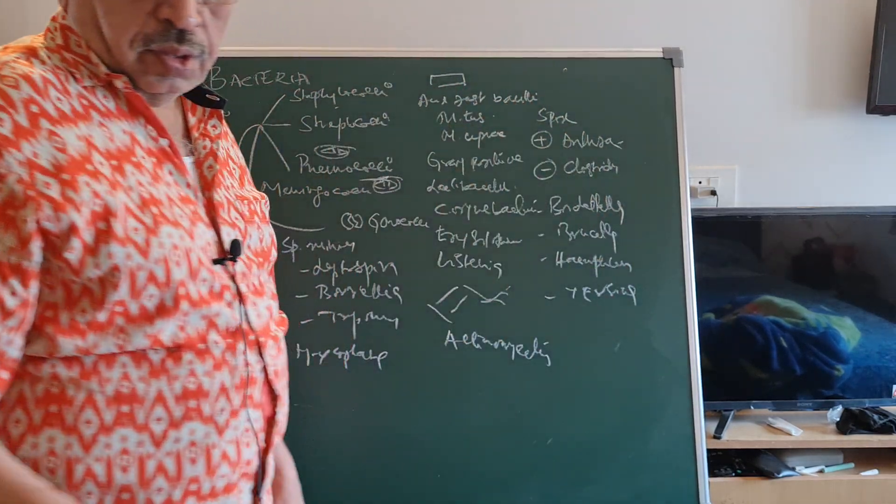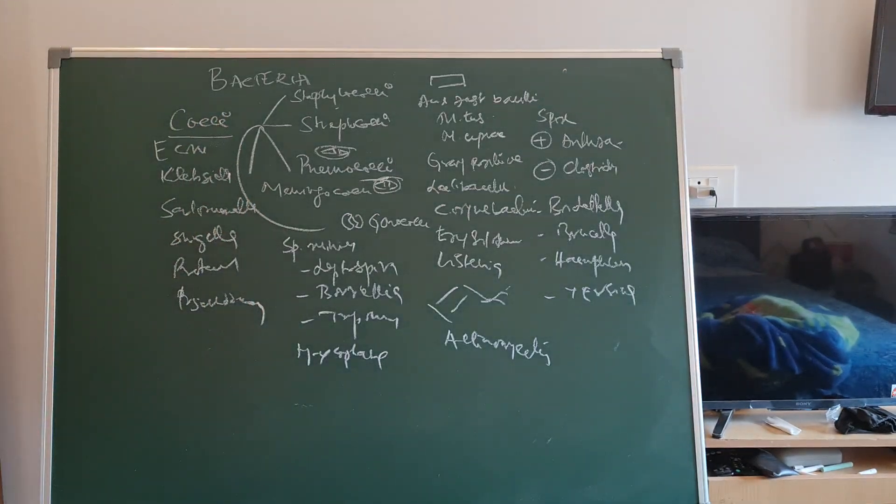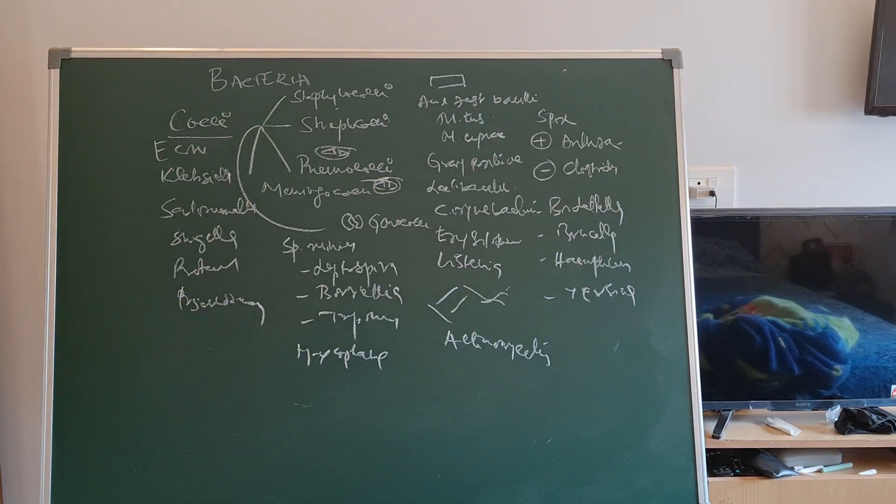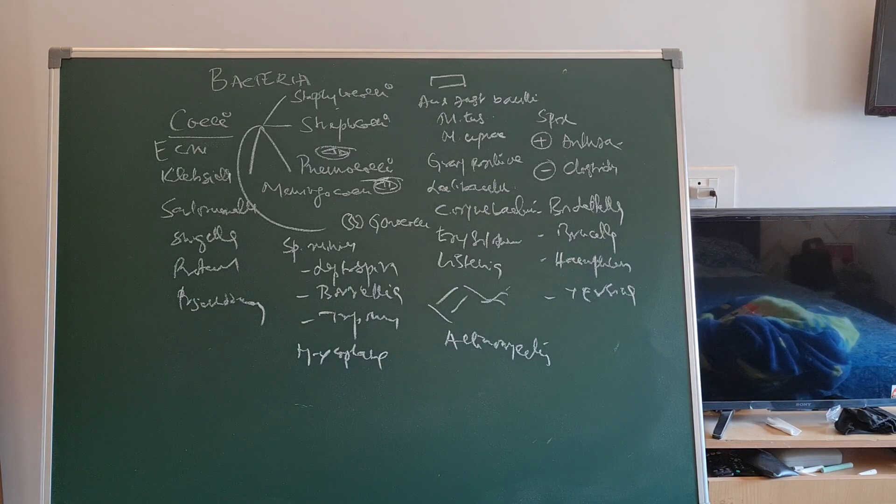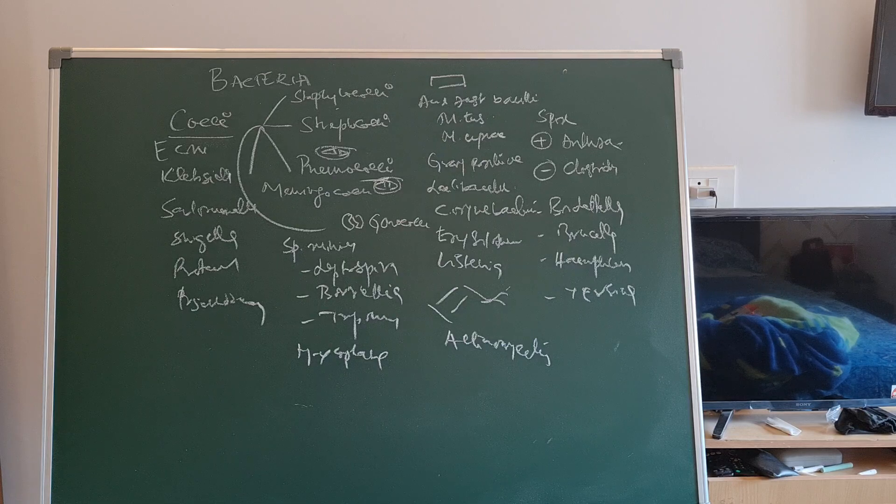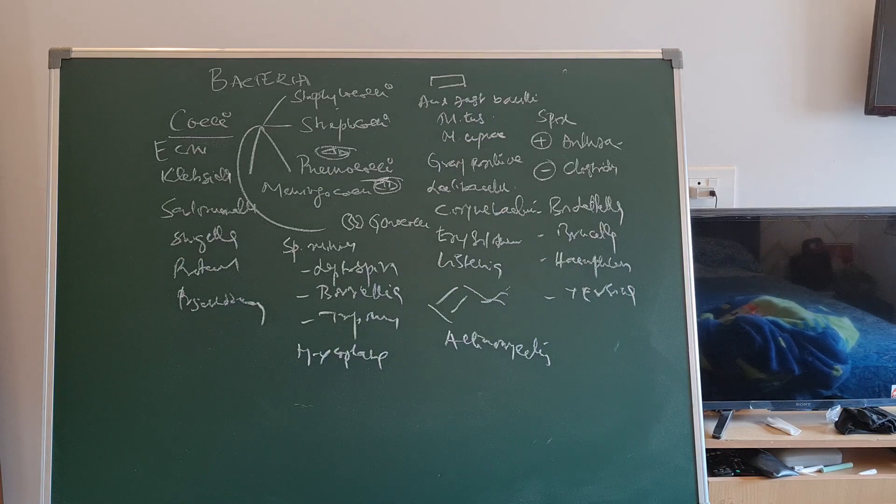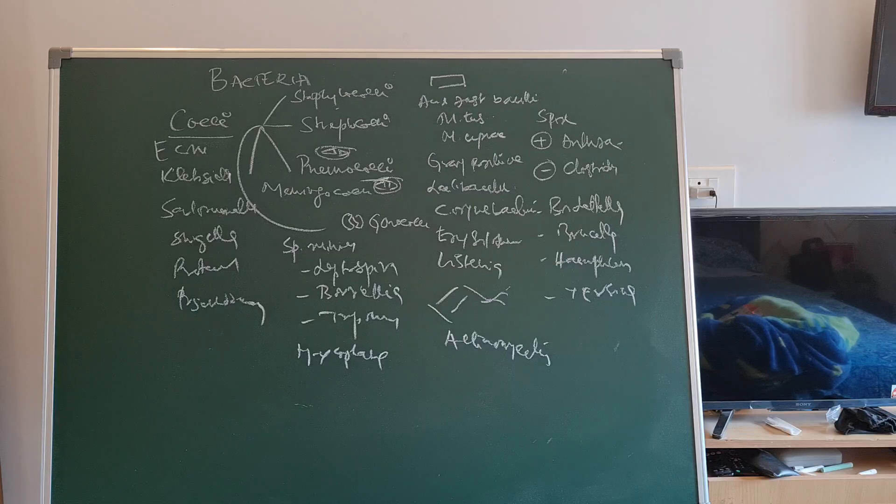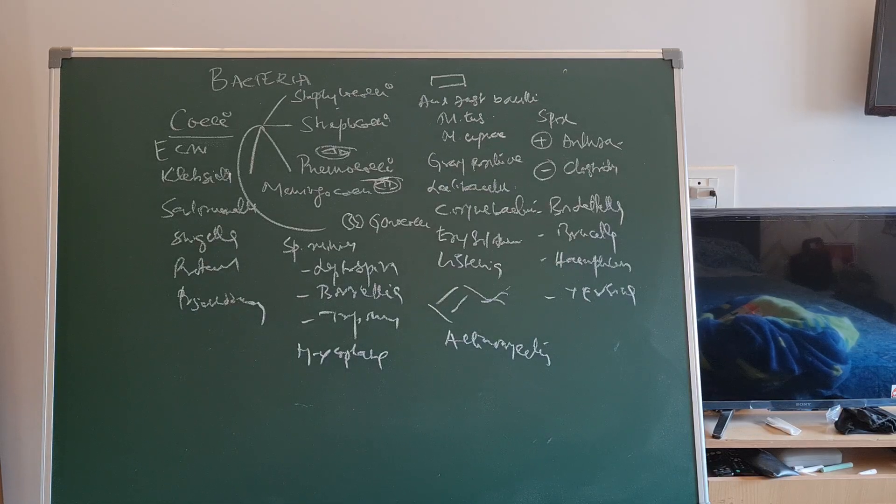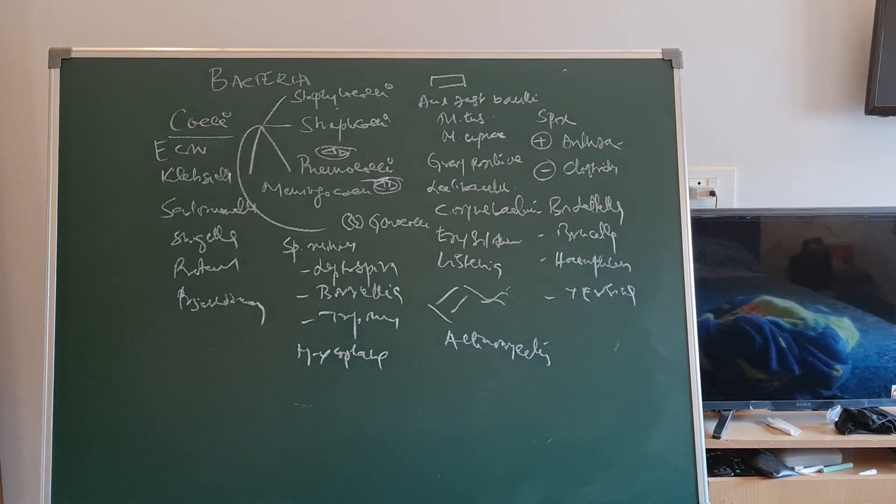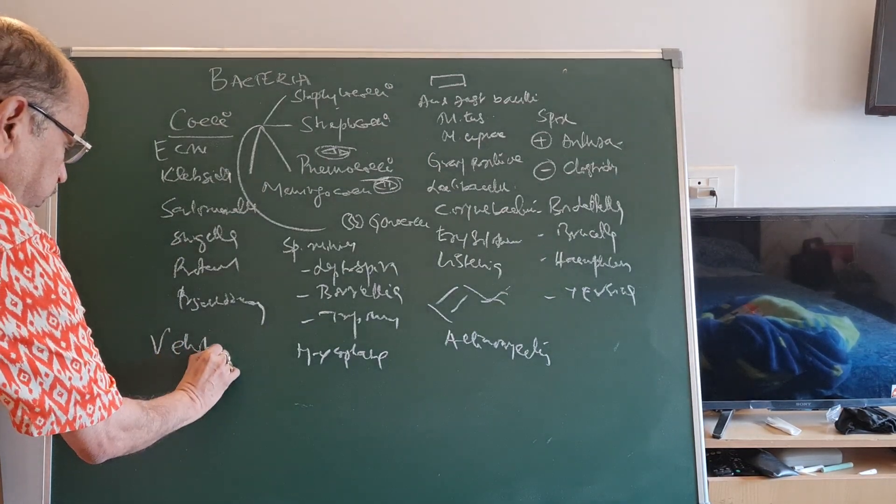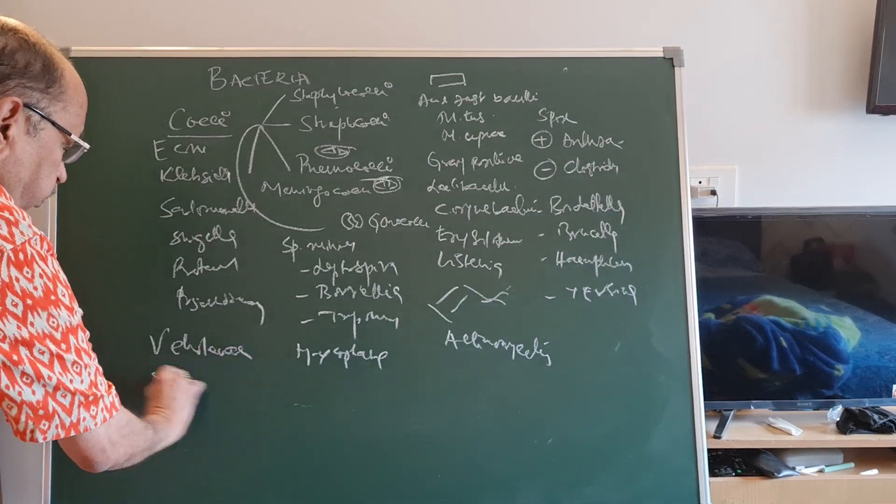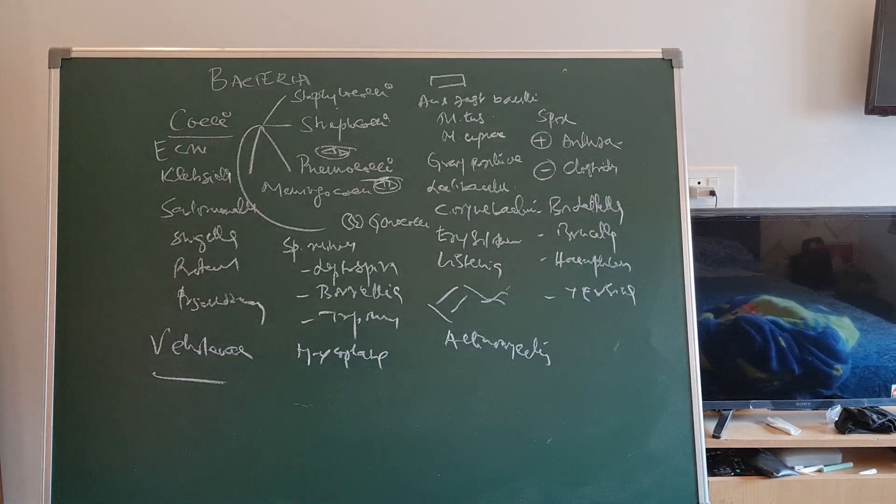So please remember the classification of bacteria depending on the morphology. The bacteria are broadly classified into cocci, spherical shaped organisms; bacilli, rod shaped organisms; comma shaped organism is Vibrio cholerae.